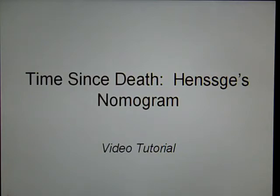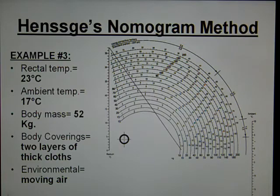This is a quick tutorial of how to solve a nomogram. For this example, we're going to look at a victim that was found outdoors who has a rectal temperature of 23 degrees Celsius.